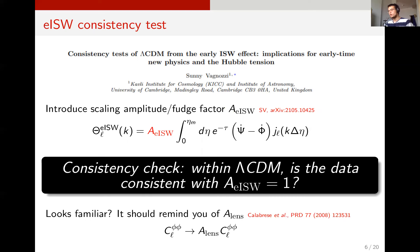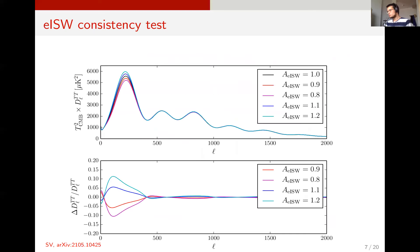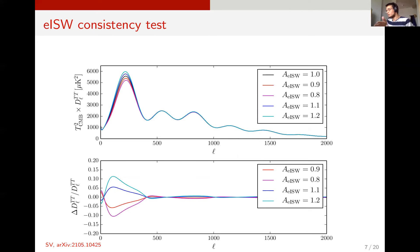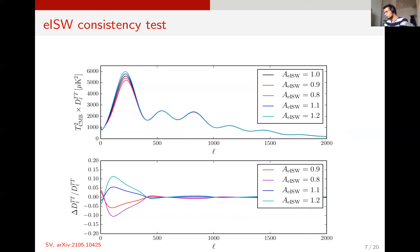If I change the early ISW amplitude, you see you increase or decrease power especially around the first peak, which makes total sense since the modes which most affect the early ISW are those around the scale of the first peak. The early ISW template has limited support for multipoles greater than about 400. This is good because we don't go into the details of possible features in Planck data on smaller scales.